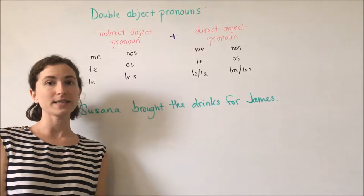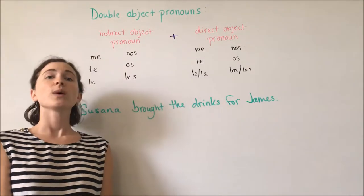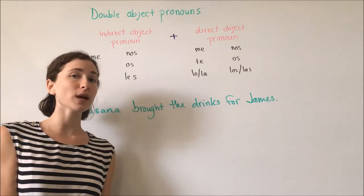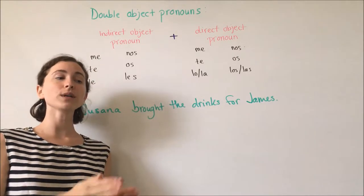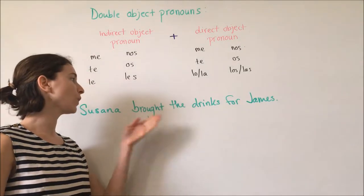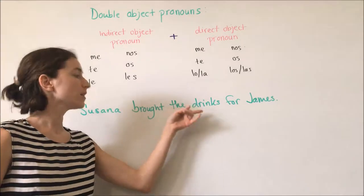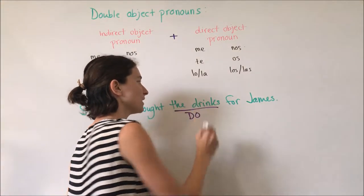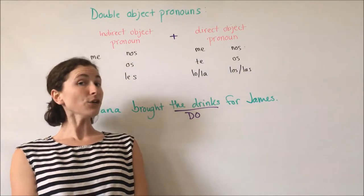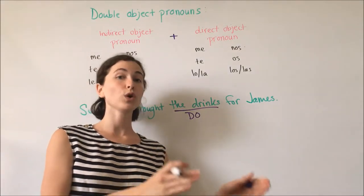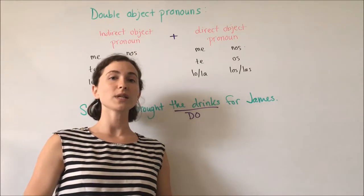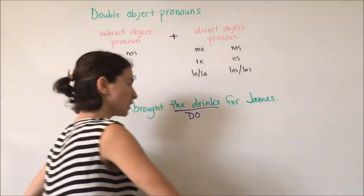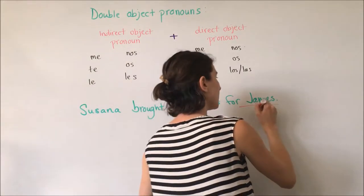If we take this sentence for example: 'Susanna brought the drinks for James,' we have both a direct object and an indirect object. To determine the direct object, we must ask what was verbed, or what is verbed. So what was brought? The drinks. The drinks in this sentence are our direct object. For the indirect object, we ask to whom or for whom is the direct object. So to whom or for whom were the drinks? James. So James is our indirect object.